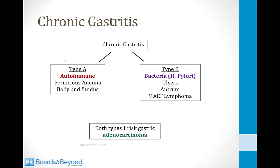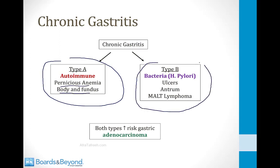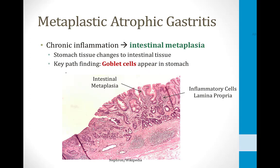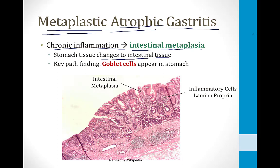To summarize chronic gastritis: Type A is the autoimmune form causing pernicious anemia, affecting the body and fundus. Type B is the bacterial form with H. pylori, leading to ulcers and affecting the antrum, and associated with MALT lymphoma. Both types are associated with adenocarcinoma of the stomach because chronic inflammation can lead to intestinal metaplasia — where stomach tissue changes to resemble intestinal tissue. This condition, called metaplastic atrophic gastritis, is characterized by the presence of goblet cells on biopsy, which is a high-yield pathological finding.